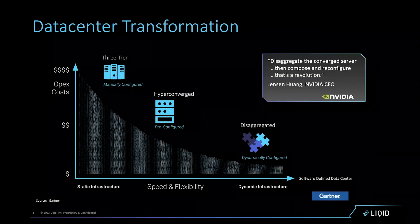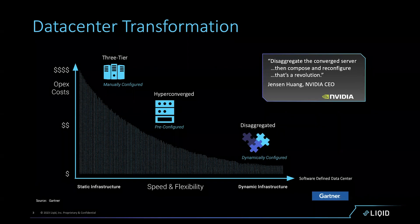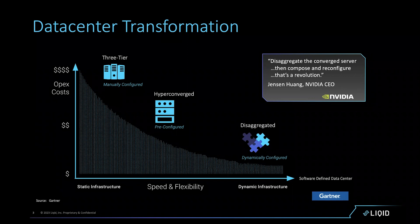This is the one marketing slide we like to talk about, particularly from Gartner — the data center roadmap. Where were we? Where are we? Where are we headed? The key point is that statically configured infrastructure is not the future. The future is very much around dynamically configuring your infrastructure to best match the workload being deployed.